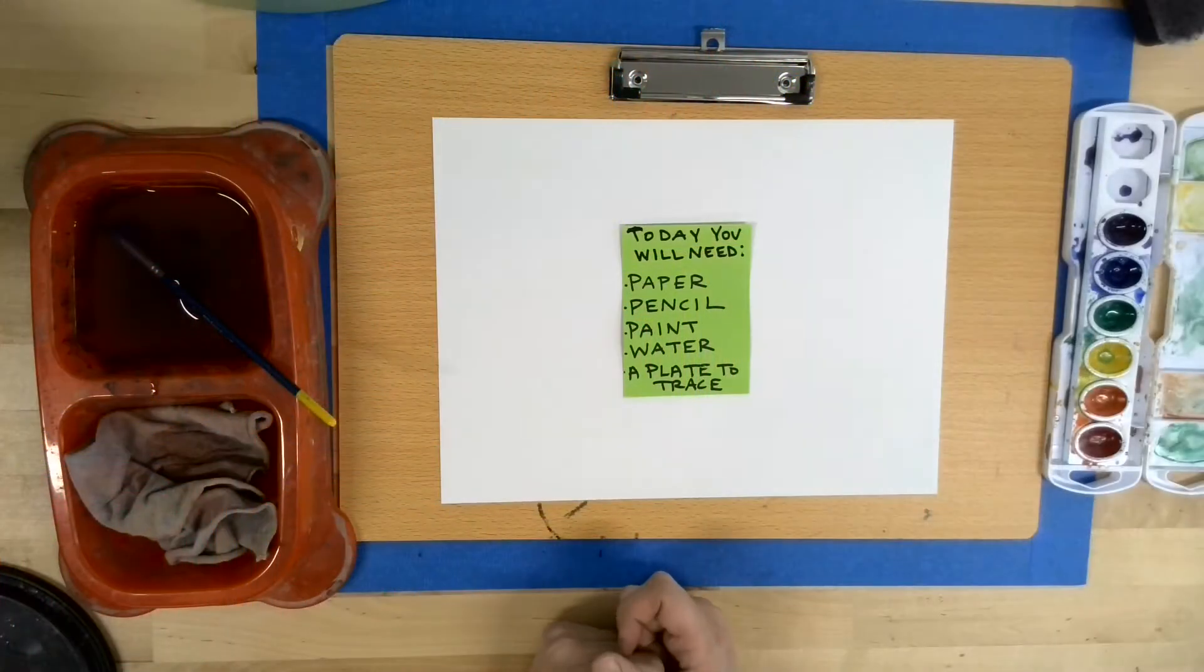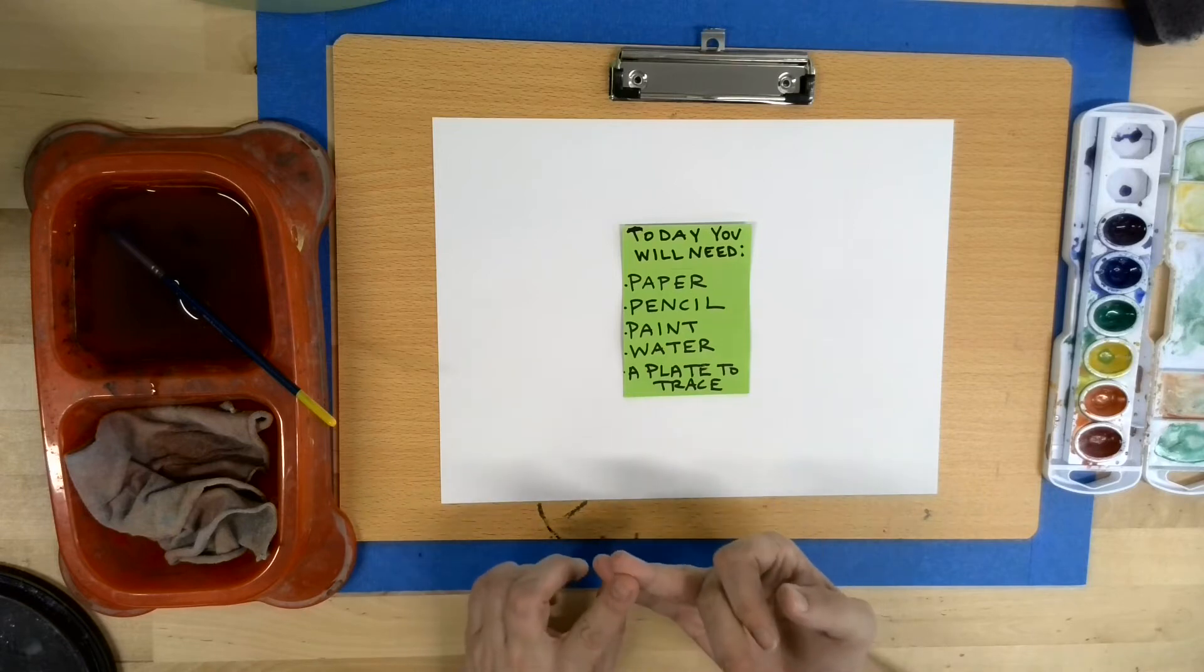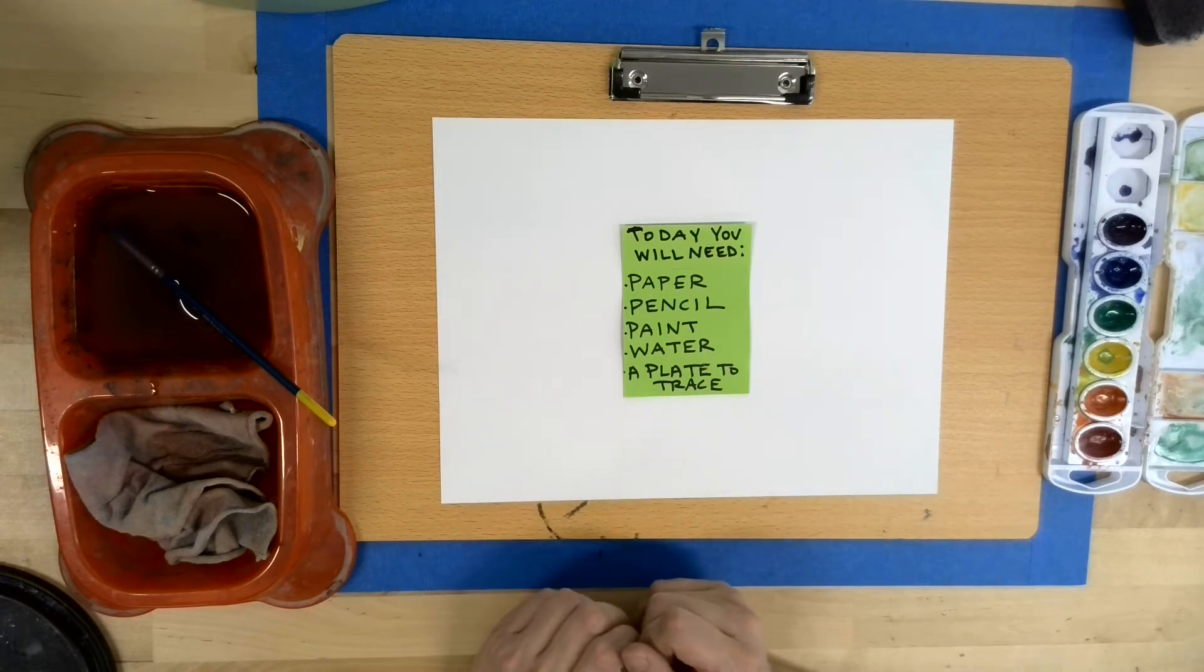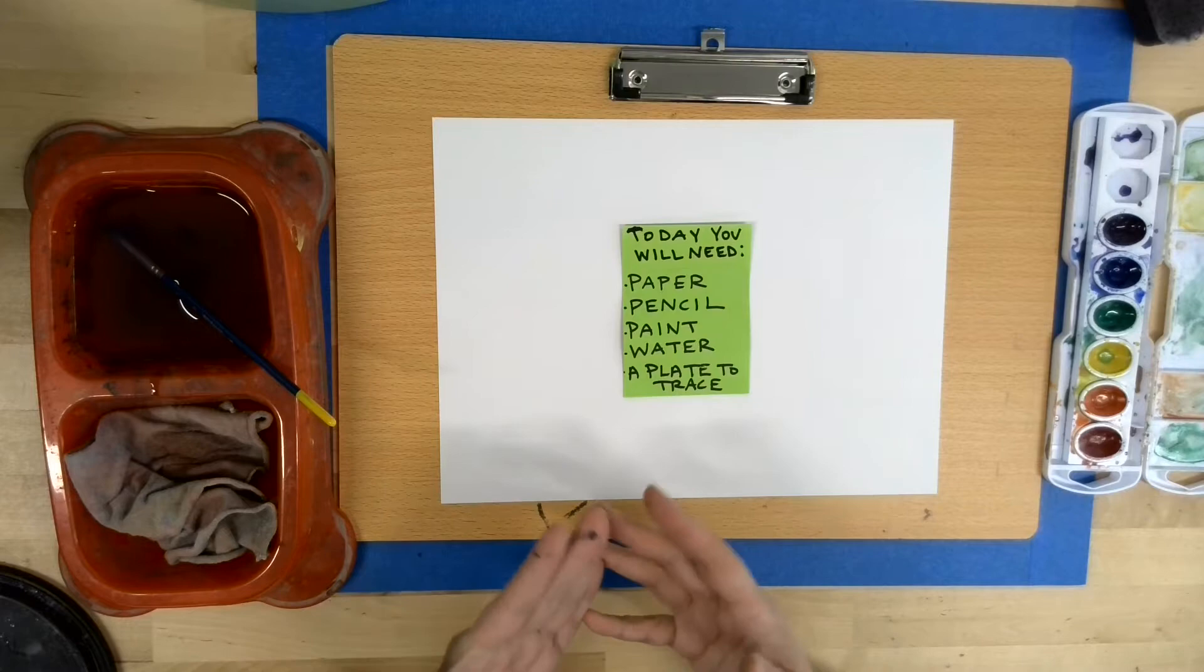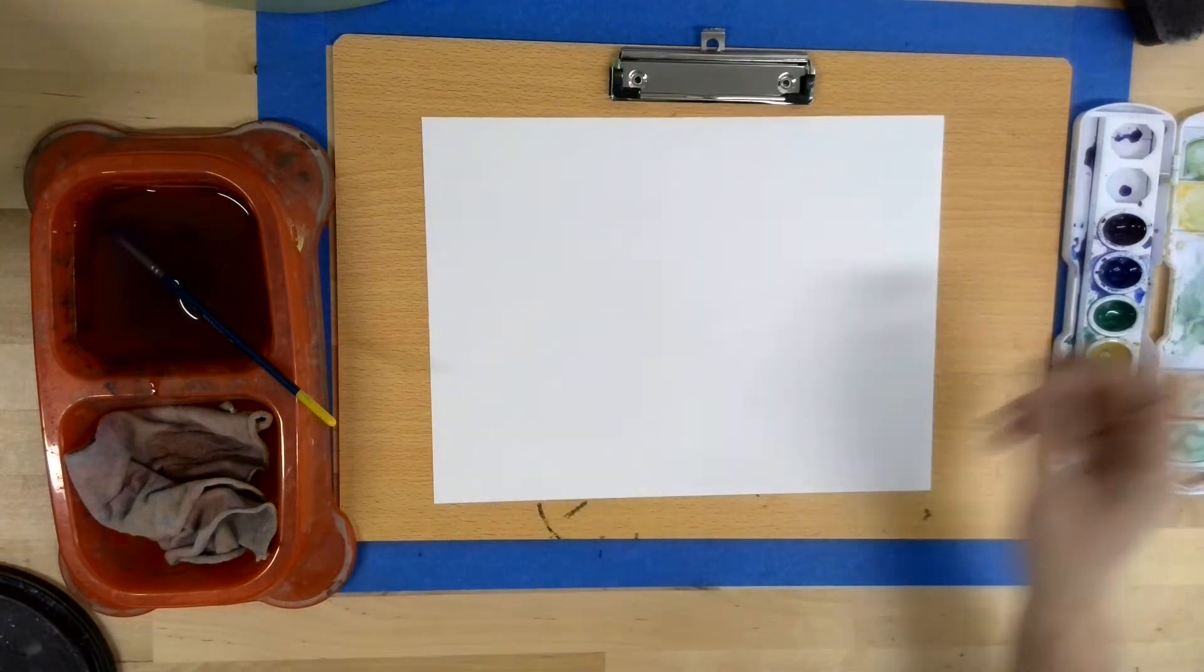Today you will need paper, pencil, paint, water, and a plate to trace. If you don't have paint, don't worry, you can use markers or crayons to add color.